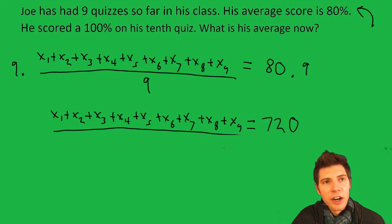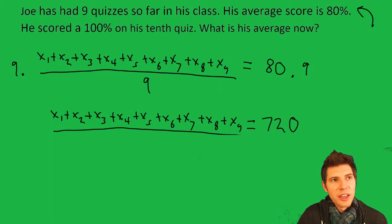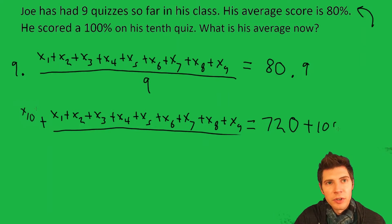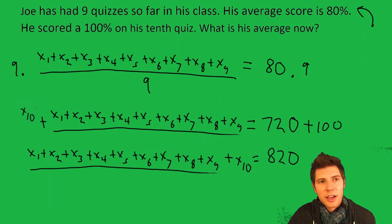Now we want to add 100 to that because we know the 10th score was 100%. So we're going to do plus 100 for our 10th test. We also want to add 100 to this side because we're going to do the same thing to both sides.